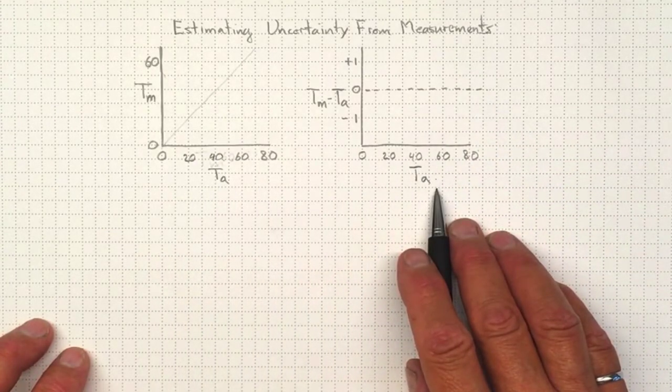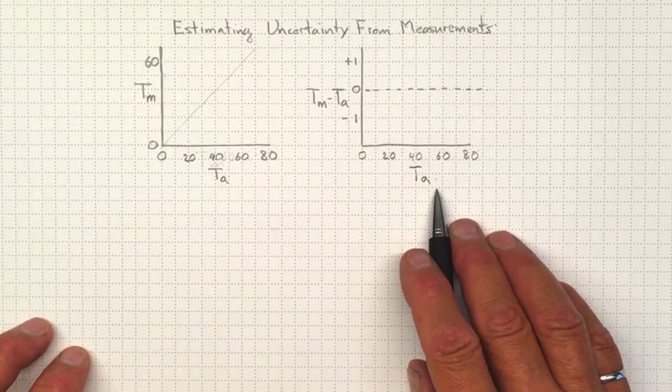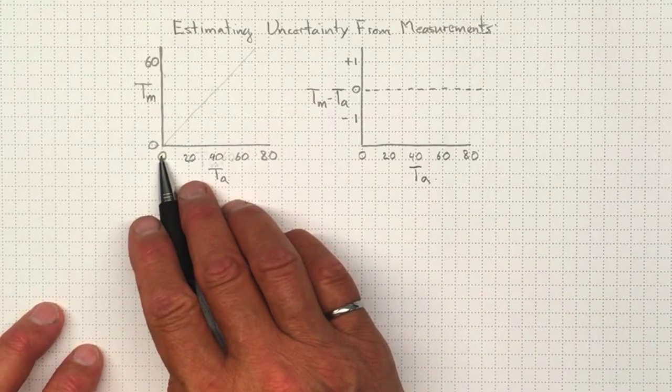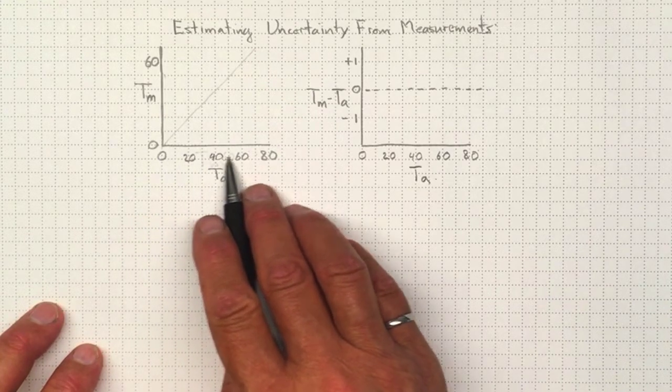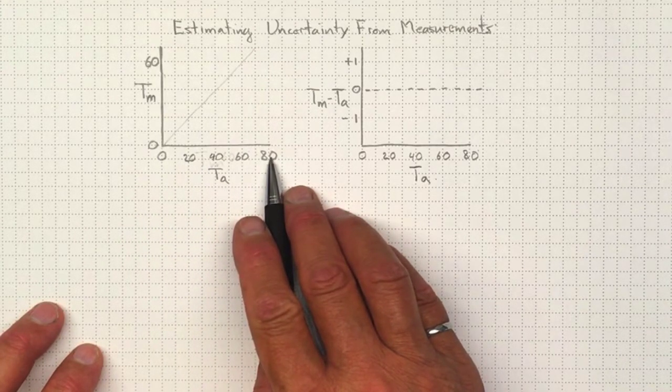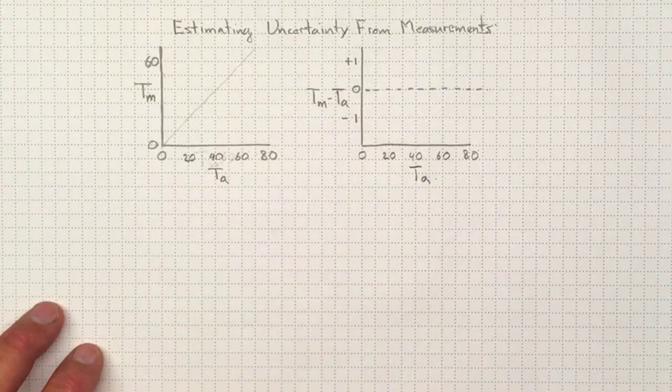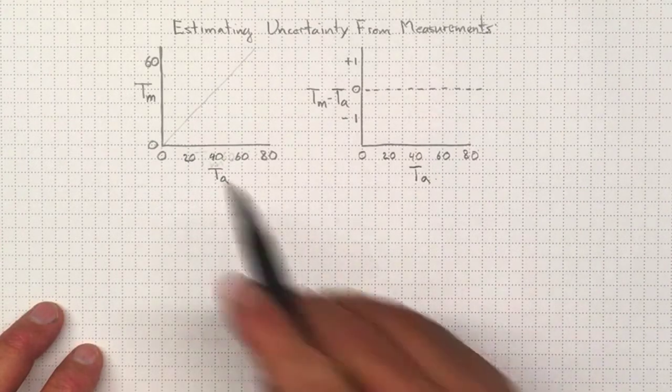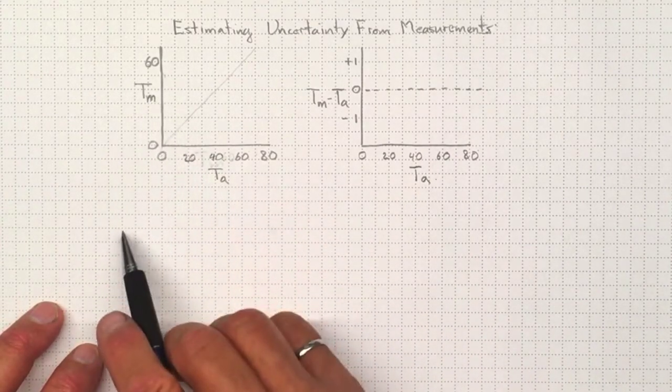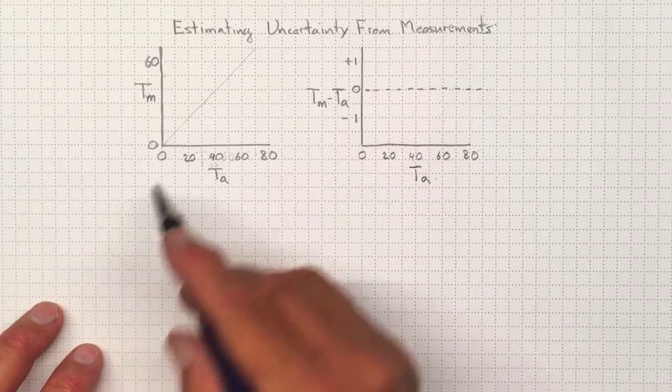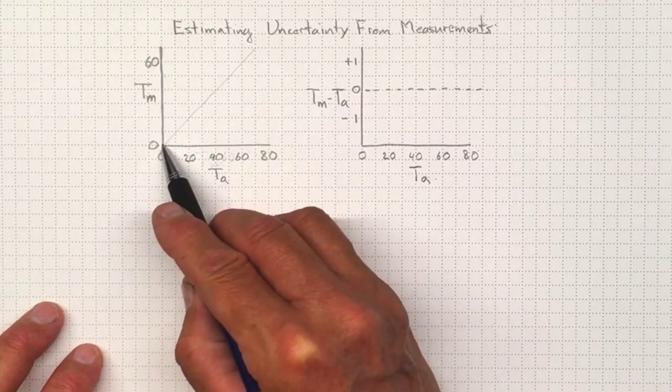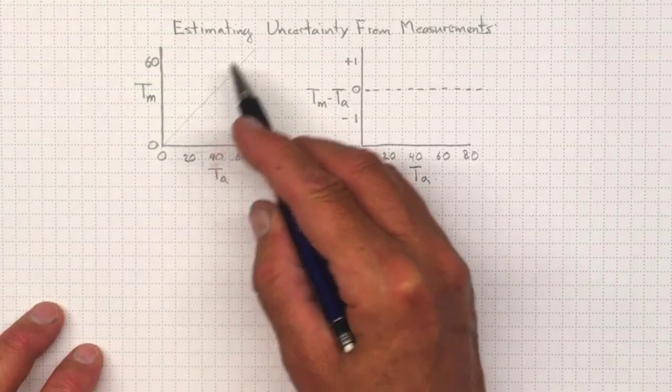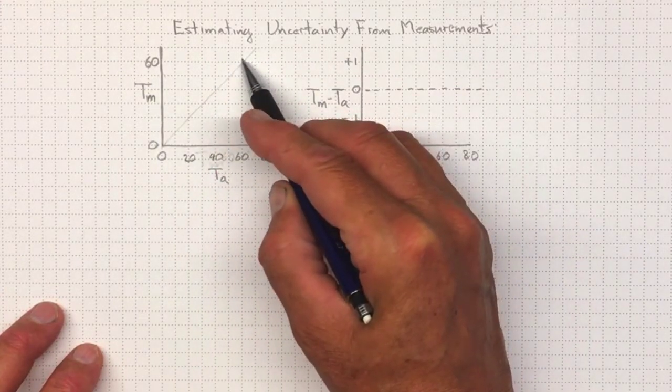All of the things I'm doing here with temperatures apply to any measurement you want to make. So if I could carefully control my environment to give it different temperatures between 0 and 80 degrees Celsius, then I could put my thermometer into that environment and make measurements with it to get a measured temperature. Now in a perfect world, when I had 0 in my environment, I'd measure 0 on my thermometer. When I had 40, I'd measure 40. When I had 60, I'd measure 60 and so on.